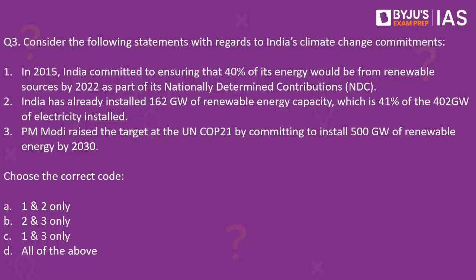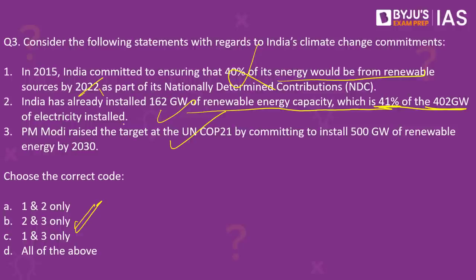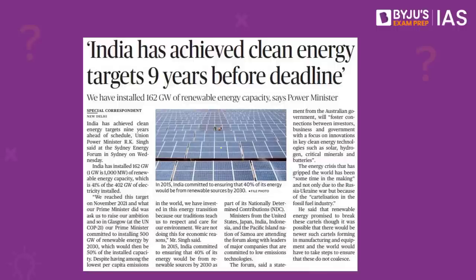Question number three. Consider the following statements with regards to India's climate change commitments. Number one: in 2015, India committed to ensuring 40% of its energy would be from renewable sources by 2022 as part of its Nationally Determined Contributions. Second: India has already installed 162 gigawatts of renewable energy capacity, which is 41% of the 402 gigawatts of electricity installed. Third: Prime Minister Modi raised the target at UN COP — the Conference of Parties 26 — by committing to install 500 gigawatts of renewable energy by 2030. Which statements are correct? Statements two and three are correct; the answer is B. The first statement is wrong because the 40% commitment was to be achieved by 2030, not 2022. The great news is that we have already achieved this target, nine years ahead of schedule.